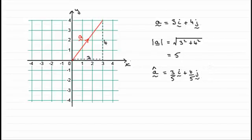And that unit vector would look something like this, where we go 3 fifths of a unit in the i direction, and 4 fifths of a unit in the j direction. The length of this is 1 unit then.